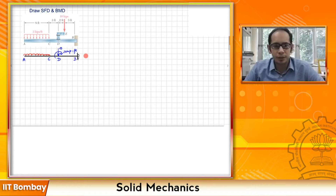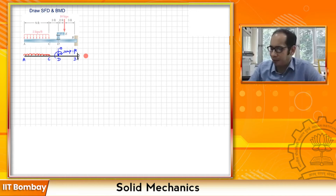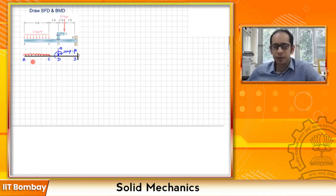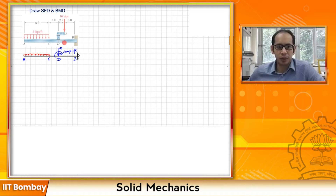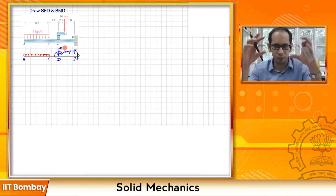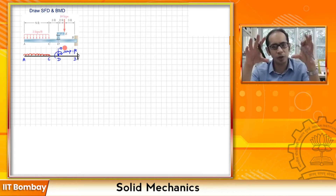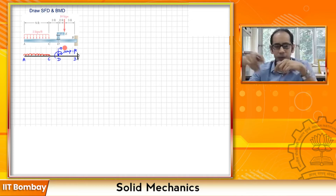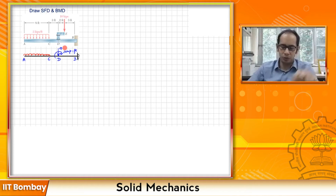This is the equivalent system of the beam. The points A, C, D, and B are still the same as in the original beam. At point D, the 10 kip load has been shifted here, and as a result of shifting the load from E to D, a moment of 10 times 2 equals 20 kip-feet has been added. So the problem has been reduced to a regular beam that we are used to seeing.